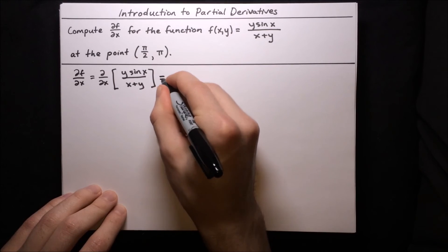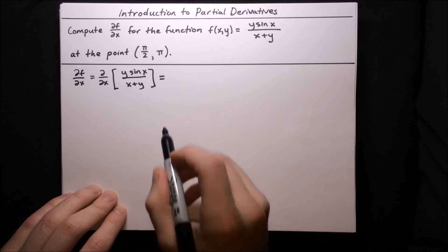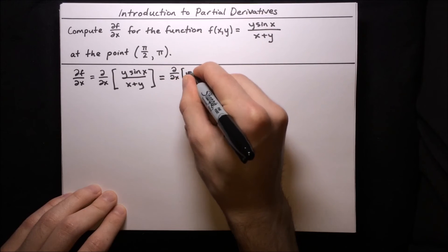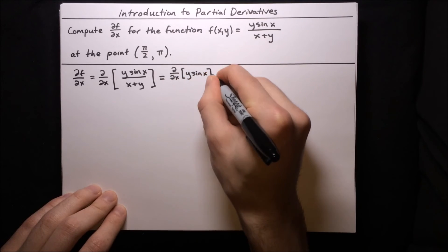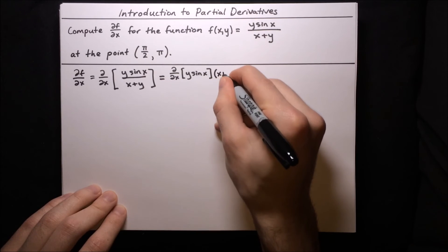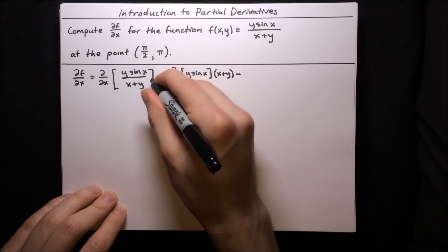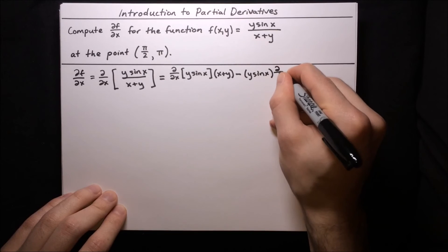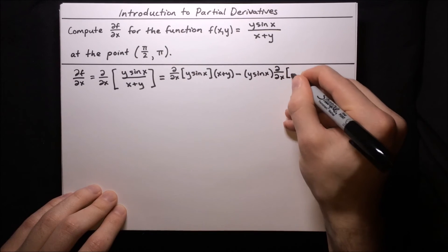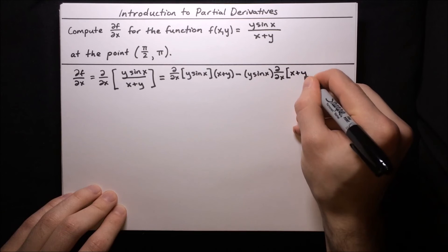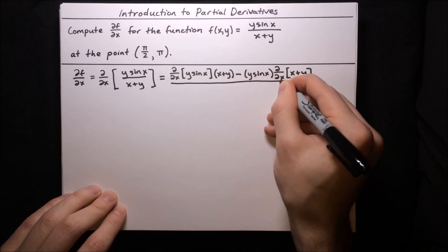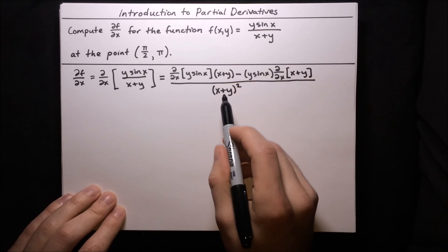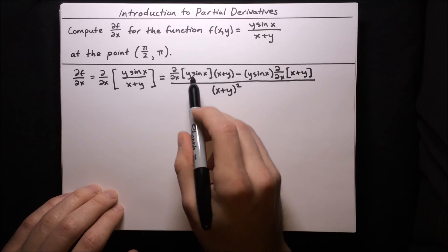Applying the quotient rule for ∂f/∂x: it's the derivative of the numerator, ∂/∂x of (y·sin x), times the denominator (x + y), minus the numerator (y·sin x) times the derivative of the denominator, ∂/∂x of (x + y). All of that divided by the denominator squared.